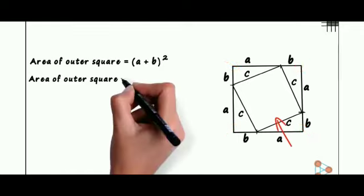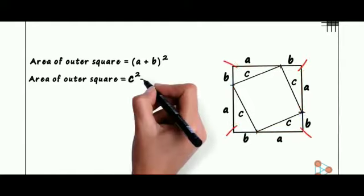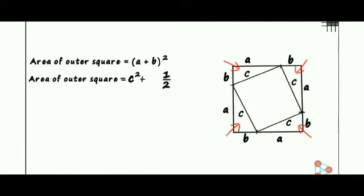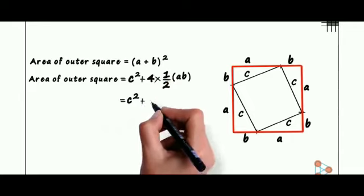The area of the square is C². Observe that each of these triangles will have the same area as their height and their base is the same. Area of each triangle is ½AB. To include the area of the four triangles, we just multiply this with four. Their total area would be 4 × ½AB. Two times two is four and we get the area of the outer square as C² + 2AB.